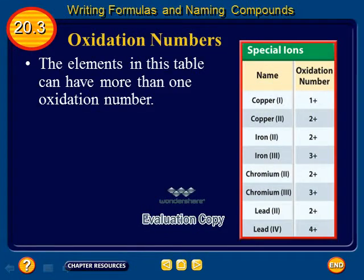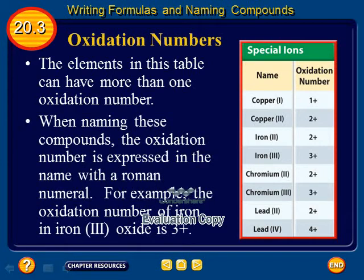The elements in this table can have more than one oxidation number. I don't expect you to memorize the oxidation numbers for the particular elements we're looking at. When naming these compounds, the oxidation number is expressed in the name with a Roman numeral. For example, the oxidation number of iron in iron(III) oxide is 3+.